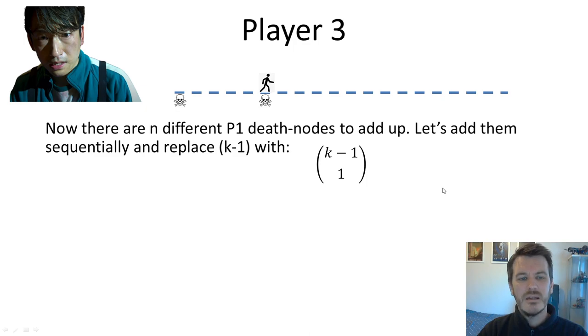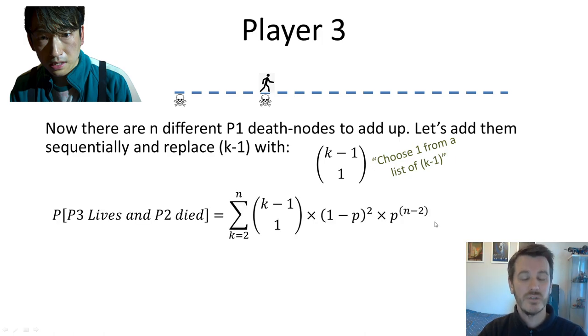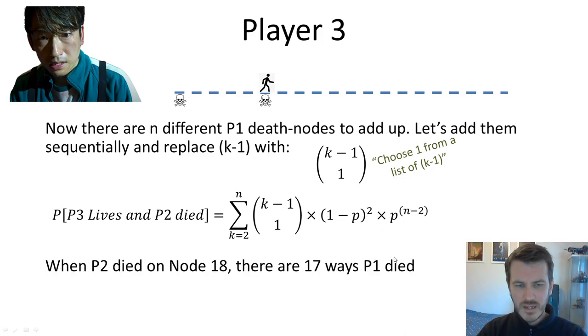There are, however, n different values of k. So we need to move player 3 along. He could be starting on any one of these 18 nodes and we're going to need to add up all the probability contributions from all 18. So instead of, while we're at it, we're also going to replace k minus 1 with k minus 1 choose 1. It might seem trivial and stupid to do that, but we're going to use it later when we come to generalize for player 4, 5, 6 and 7 and so on. So what we're going to do is we're going to add up all of the values of k where player 3 is starting his game from using our formula.